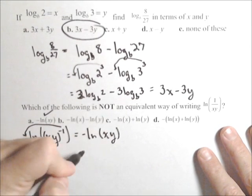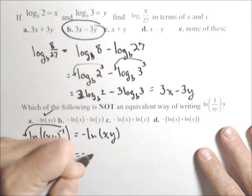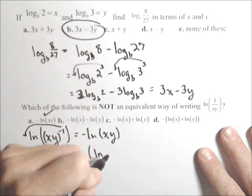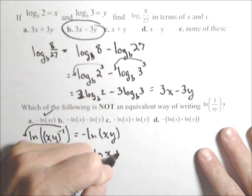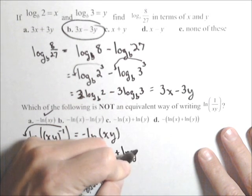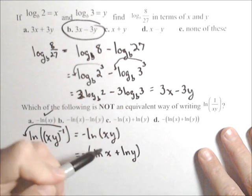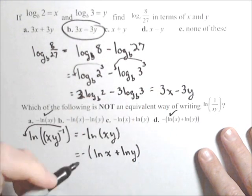Now, I have multiplication inside there. So I have negative, and ln of x times y could be rewritten as ln of x plus ln of y. Product goes to addition of two separate logs. So d is okay.